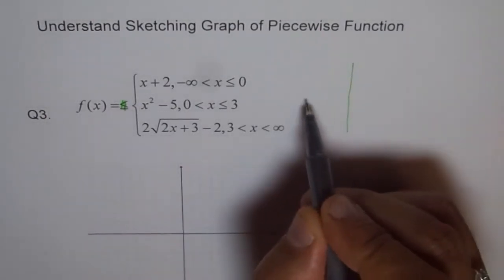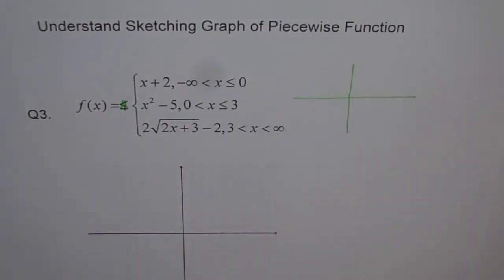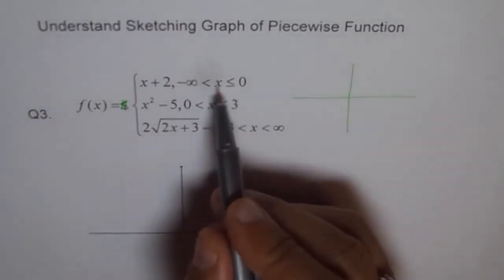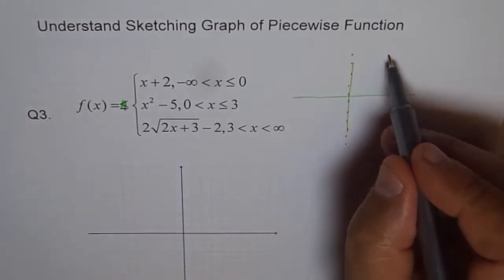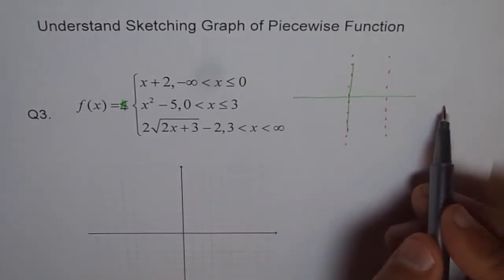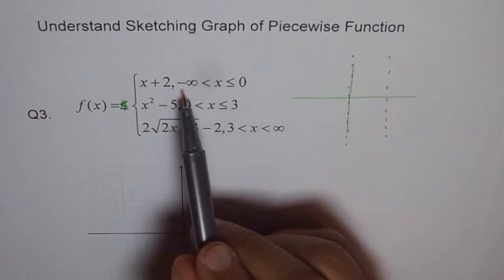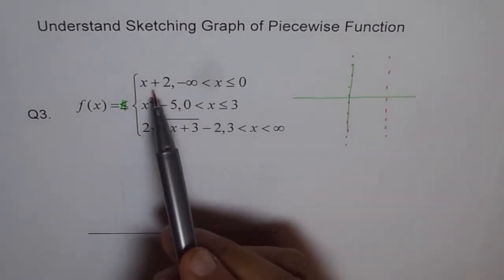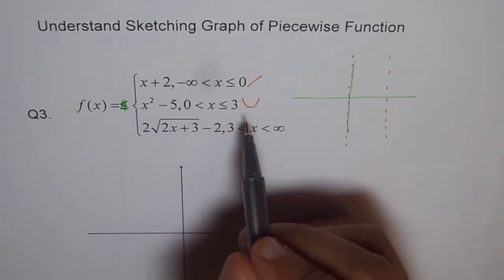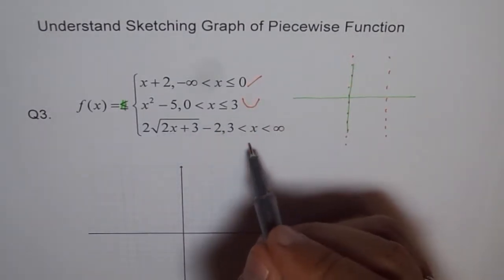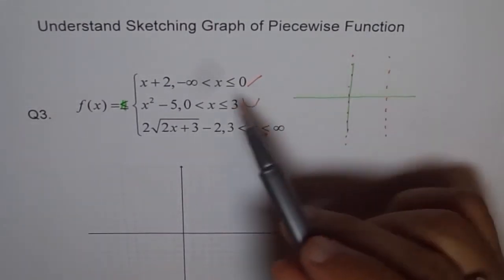Let's try to make a rough picture of this. Here is a coordinate system divided into 3 parts. One piece is up to 0, the second part is from 0 to 3, and the third from 3 to infinity. At 0, the point is included, but you can never include minus infinity. The straight line will look like this, the x squared minus 5 parabola will look like this, and the square root function will look like this. These are the three functions which should be joined together to form f(x).